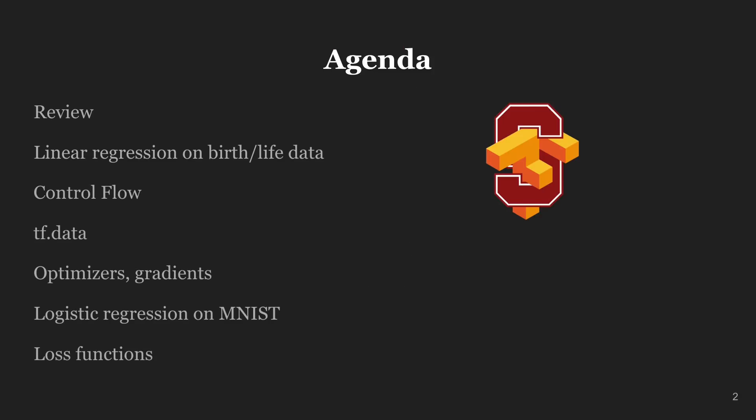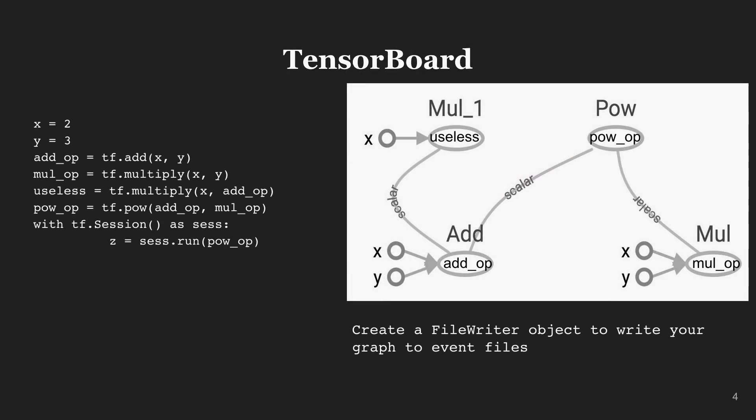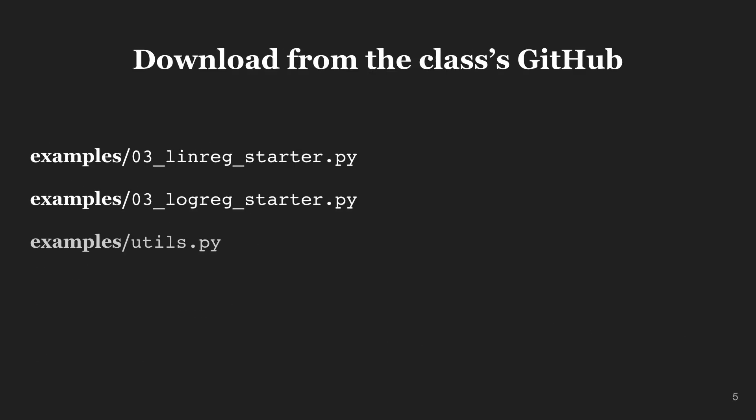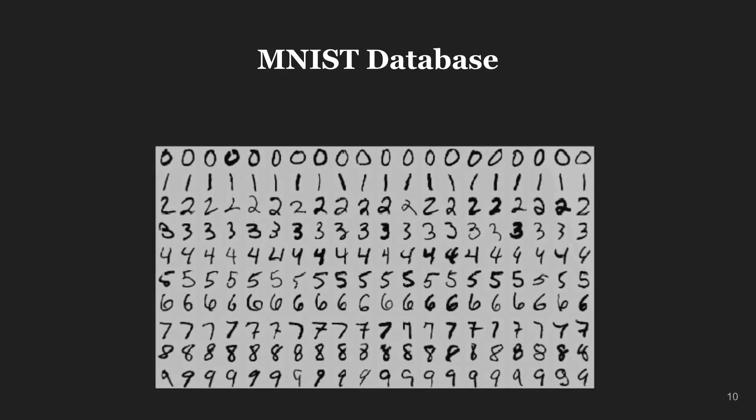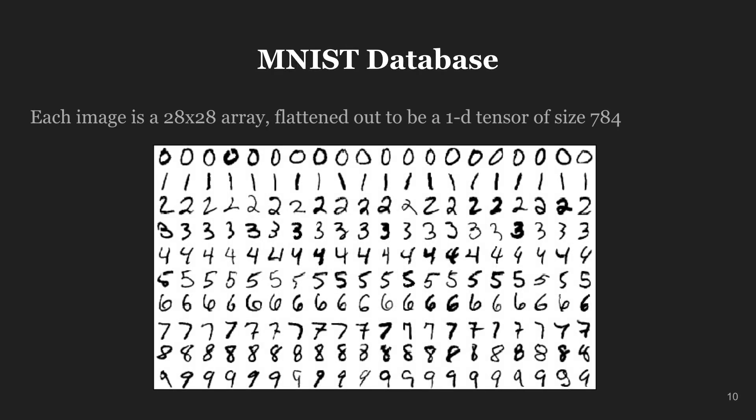A lot of the information that you've put together for the course is available to the public — your code is on GitHub and stuff like that. Have you seen any uptake from students or people outside using your code or learning from your code? I think I was surprised at how many visits I get to the GitHub repo. I just checked it one time — there's an average of about 2,000 visits a day.